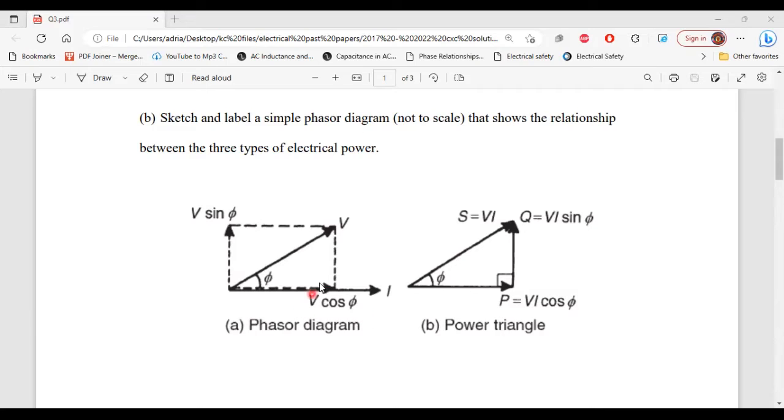If we were to multiply all the voltages by current, we're going to end up with the power triangle. So, our apparent power would equal to V times I. Reactive power would equal to V times I sin theta. True power would equal to V times I cos theta. And this would be the power triangle. Although the question asks us to only sketch the phasor diagram, it is also very important. All right, so that's it for part B.